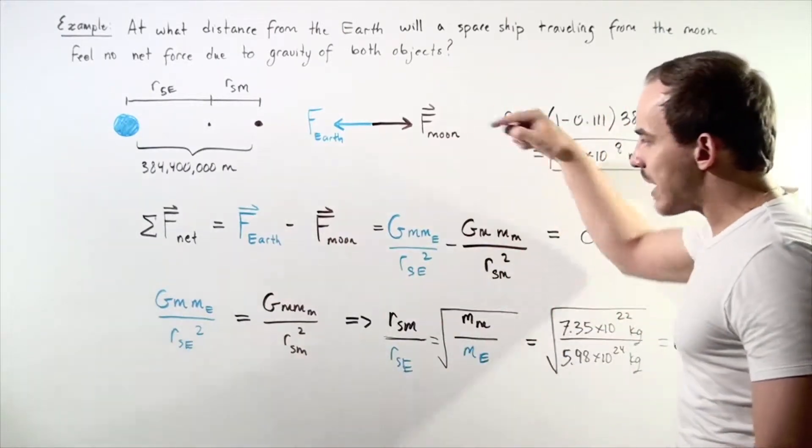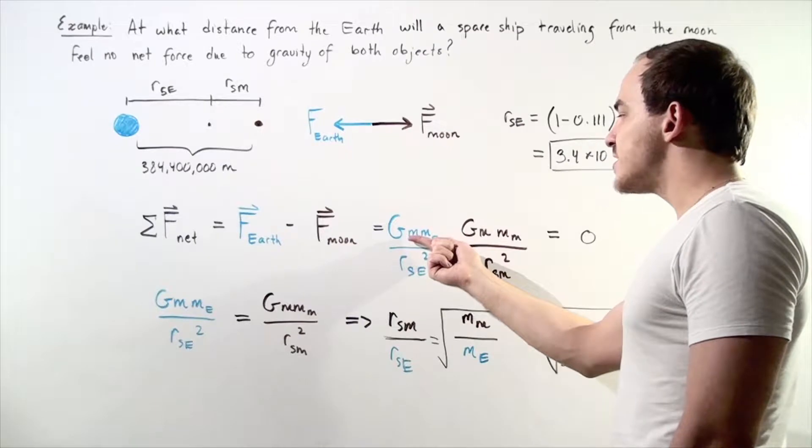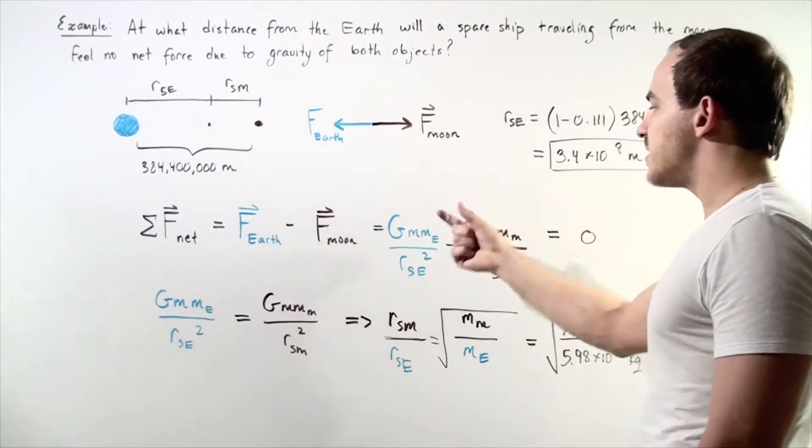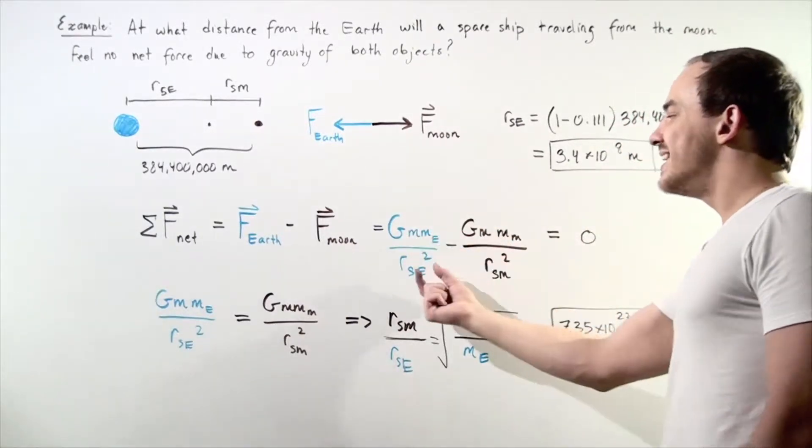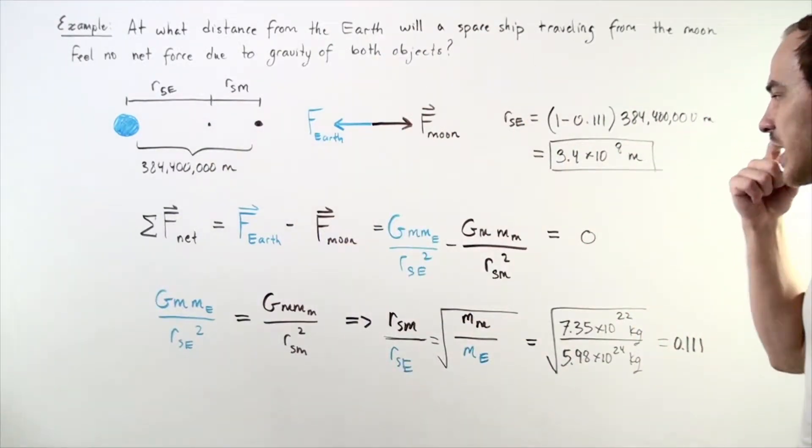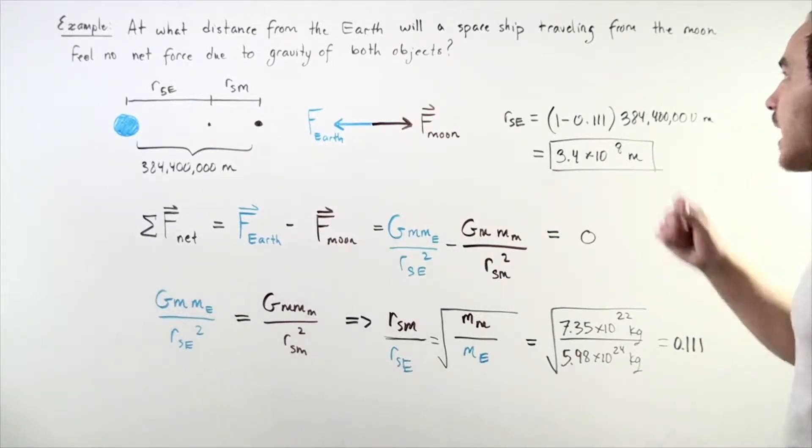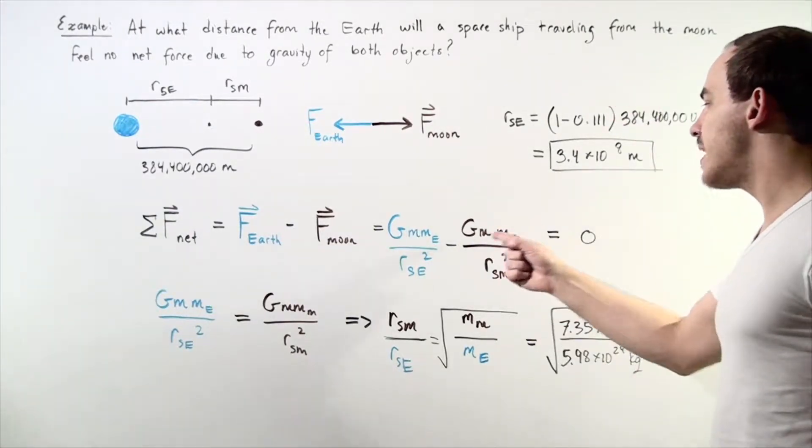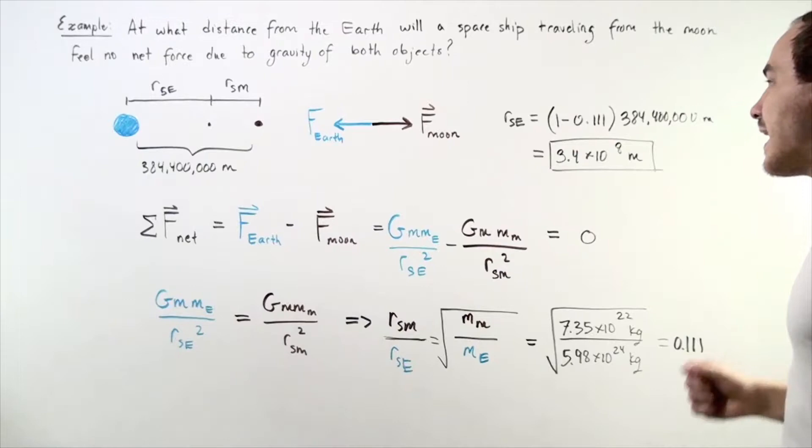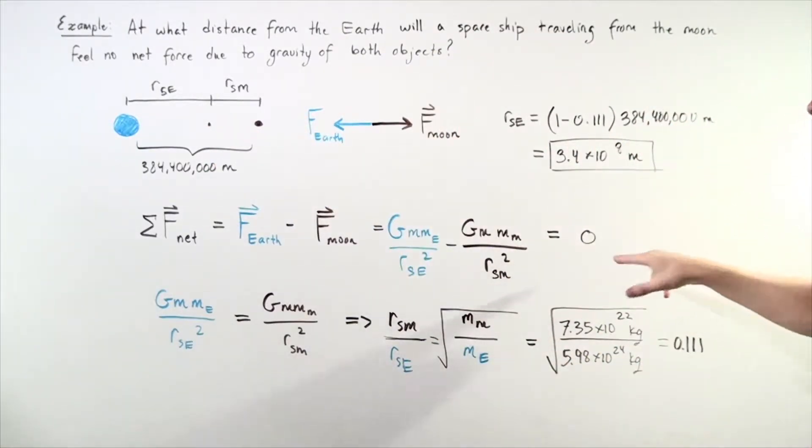This force is equal to the gravitational constant multiplied by the mass of the spacecraft, M, multiplied by the mass of the Earth, divided by the distance, this distance squared, minus the gravitational constant, multiplied by the mass of the object, our spaceship, multiplied by the mass of the Moon, divided by our distance between the spacecraft and the Moon squared. Now, this equals zero.